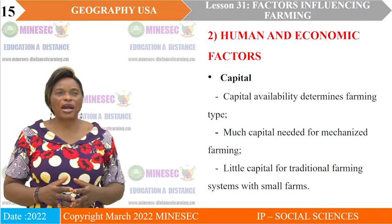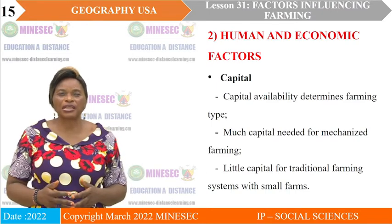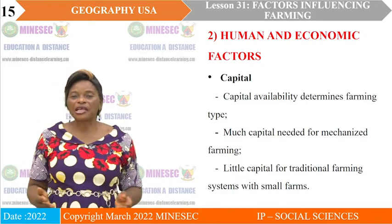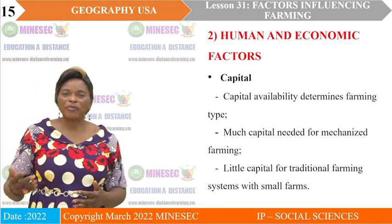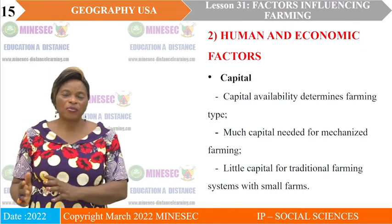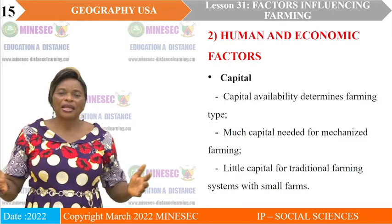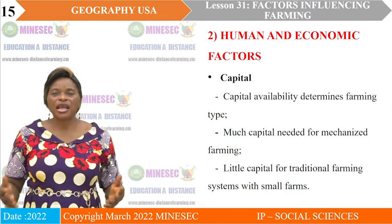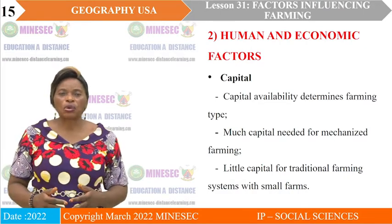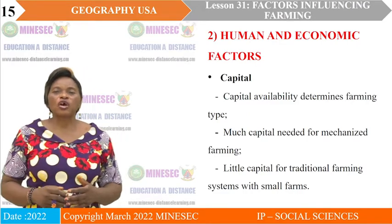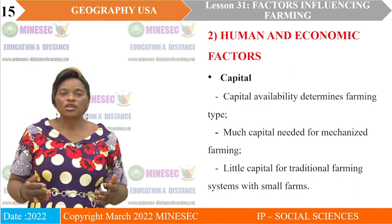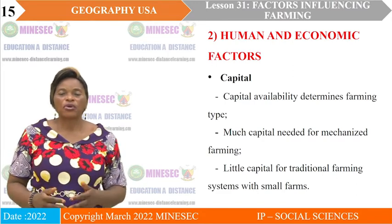Now we go into the human and economic factors. The first is capital, which is very important. Capital availability determines the type of farming that can take place. Mechanized farming requires much capital for inputs — buying machines, pesticides, fungicides, and fertilizers. Where there is much capital, there will normally be very large farms and large production. Where farmers do not have much capital, farms will be small, they cannot plow with machines, and they end up with little production.